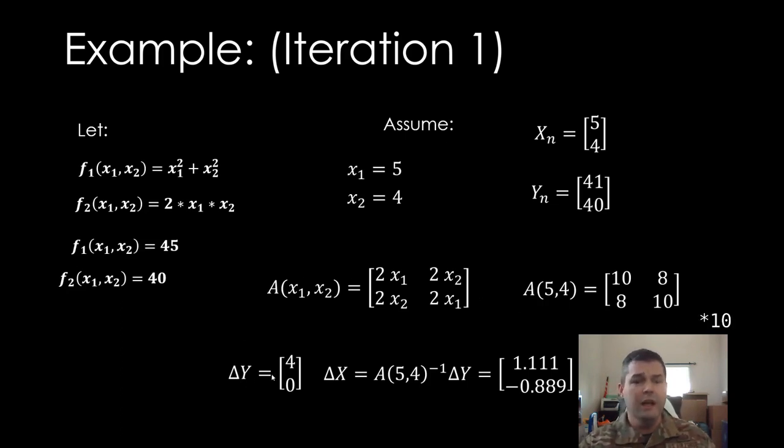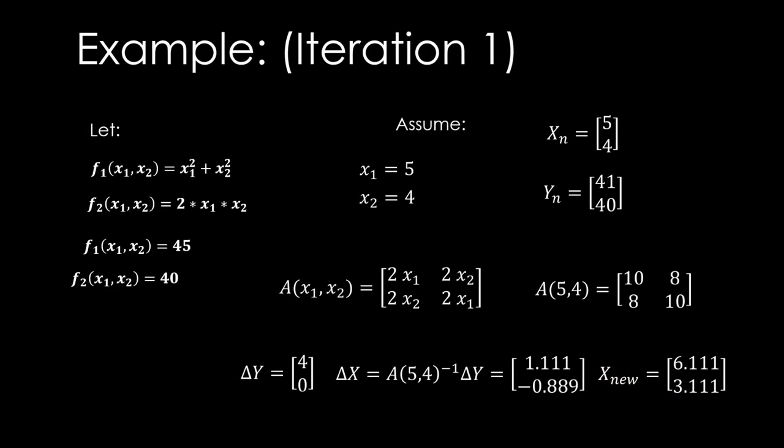Now I know my delta Y. My y1 needs to get bigger by 4 and my y2 is spot on. I don't need to change my y2. So delta X equals A(5,4) inverse delta Y. I get that I need to change my x1, make it one larger, and change my x2, make it almost one smaller. So I get this new X value, which is 6.1 and 3.1.